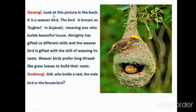Devangi says: 'Look at this picture in the book.' This is a weaver bird — you can see it in the picture. This bird is known as Sugari in Gujarati, meaning one who builds a beautiful house — 'Sugari' refers to a bird that builds an exceptionally beautiful home.